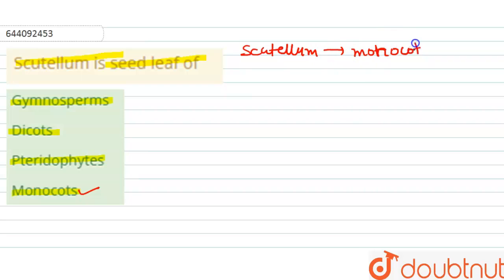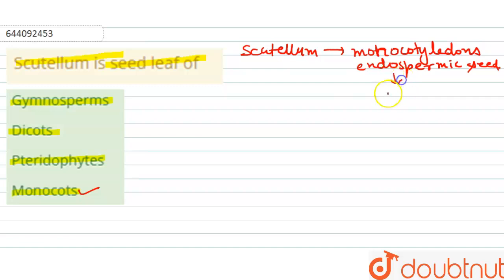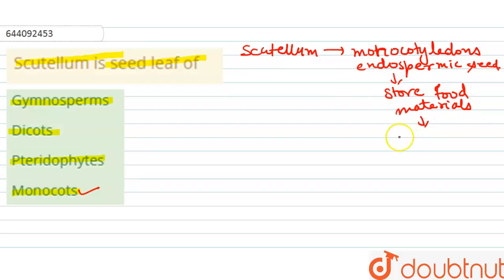Monocotyledons have endospermic seeds — those in which the stored food material is present in the form of endosperm.